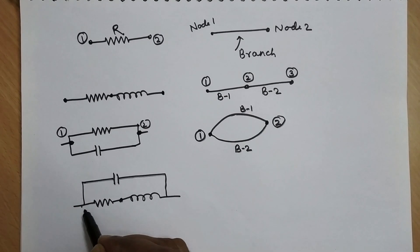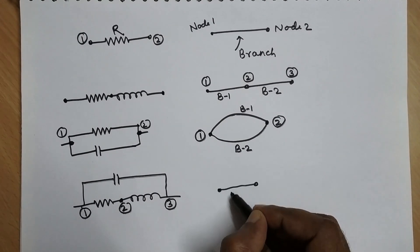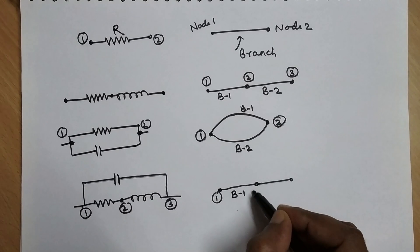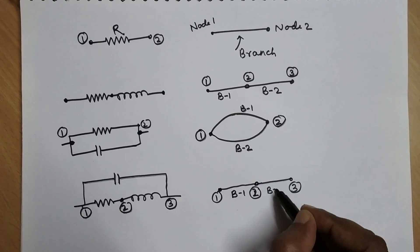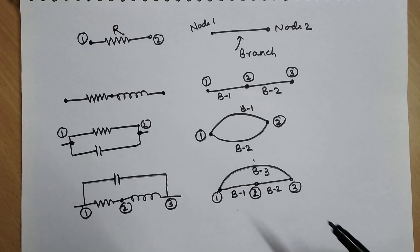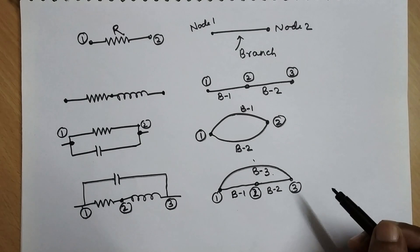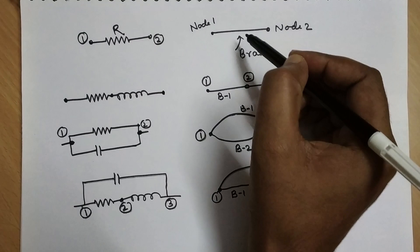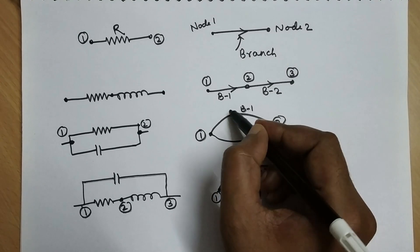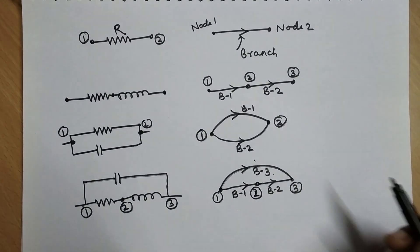In another example we have nodes 1, 2, and 3. We can represent it with node 1 connected via branch 1, node 2, node 3, branch 2 and branch 3. This is how we can convert any network into its graphical form. After converting to graphical form, we can assign the direction of current — we can assume any direction. This type of graph in which a direction is assigned is called an oriented graph.